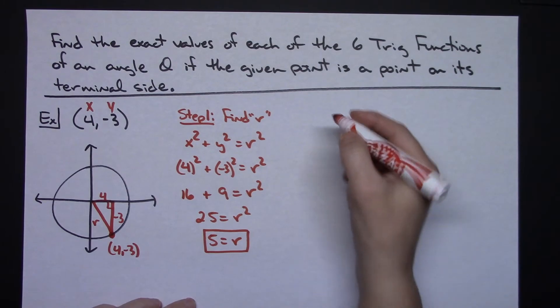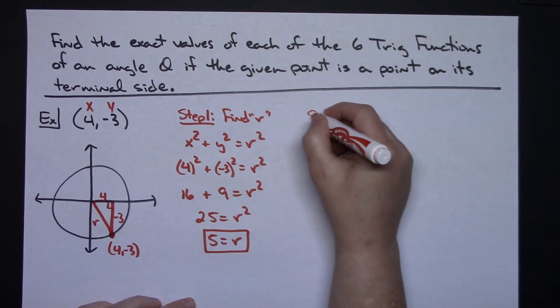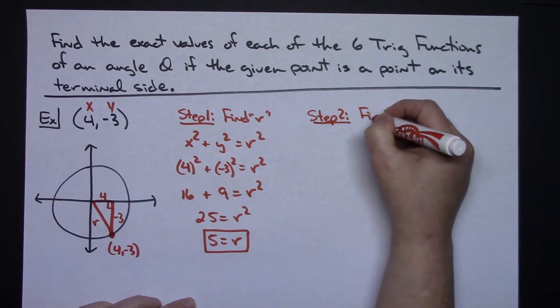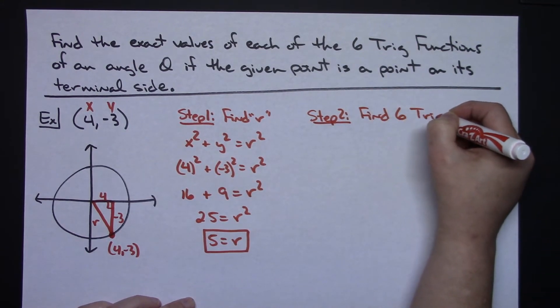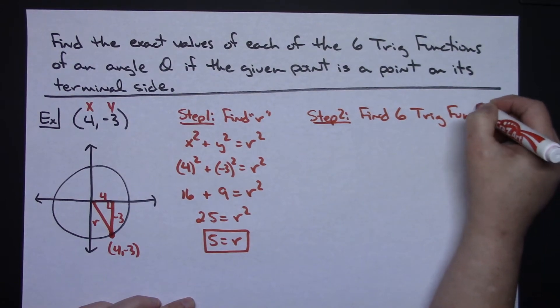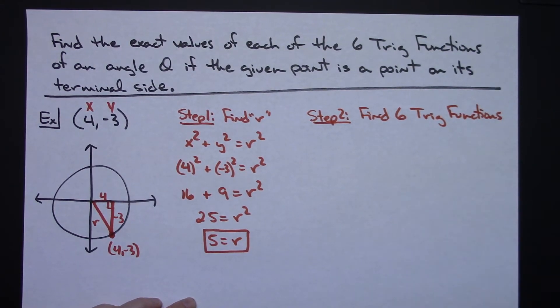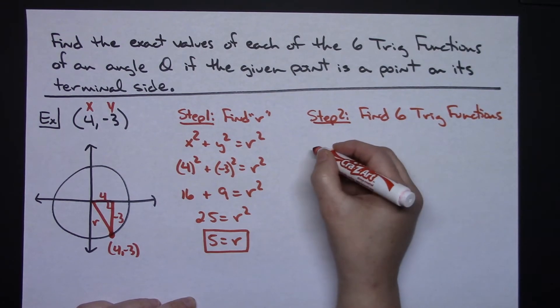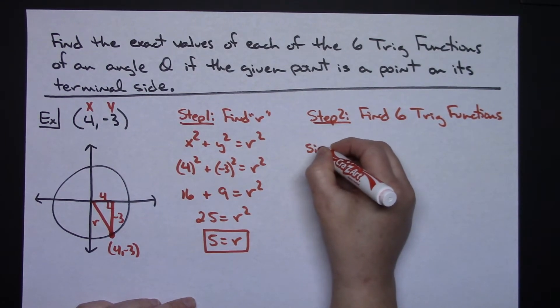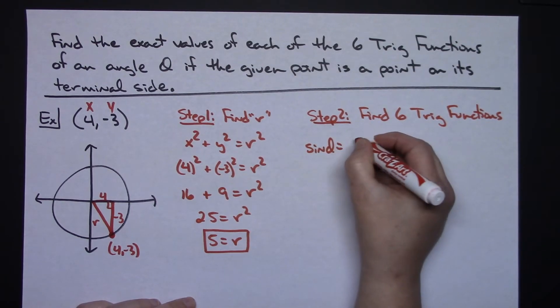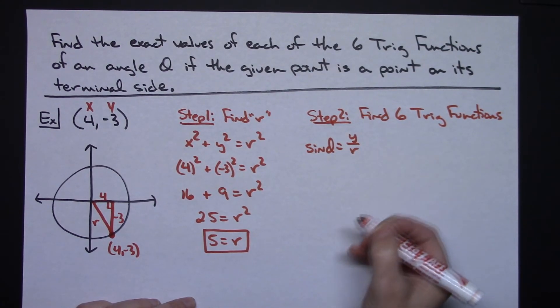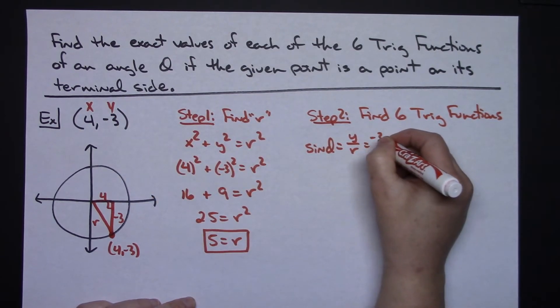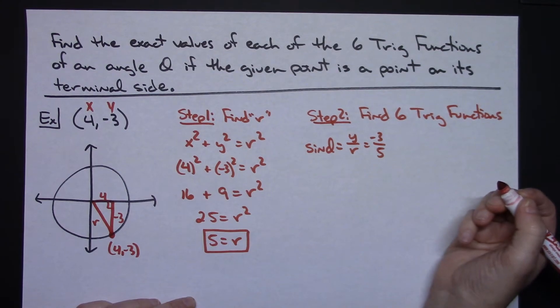Step 2 would then be to find those 6 trig functions. Now if we base it on the definitions that were just given in the previous definition there, then we're going to have sine of theta being y over r. So your y value is a negative 3 and your r value is a 5. So negative 3 fifths.